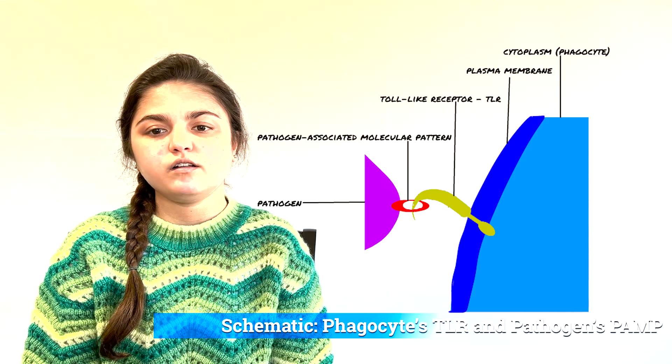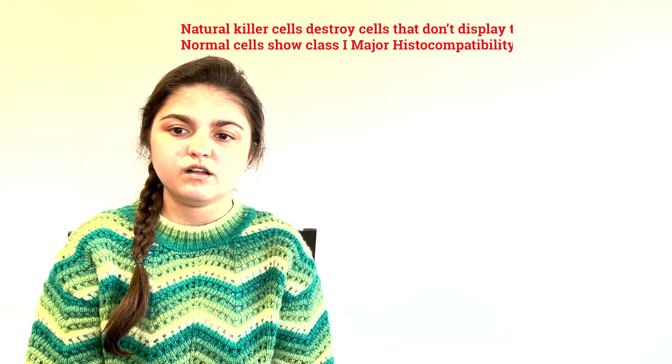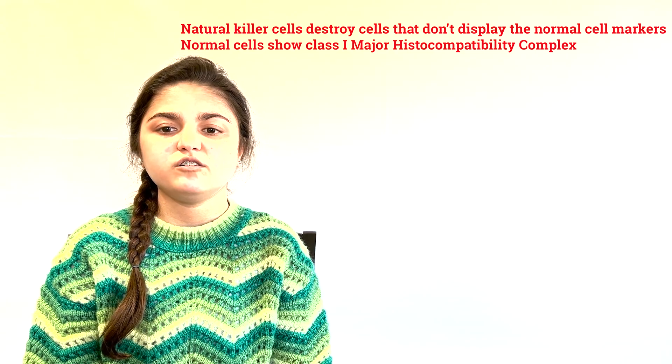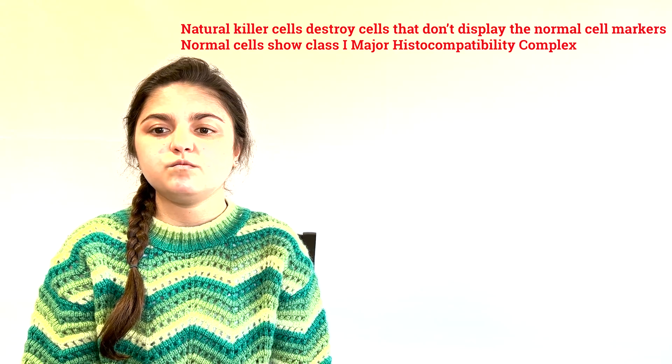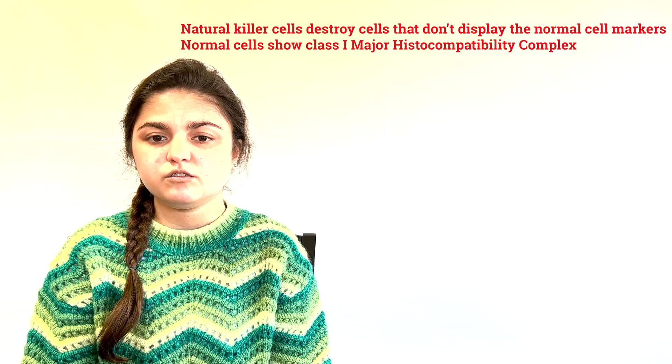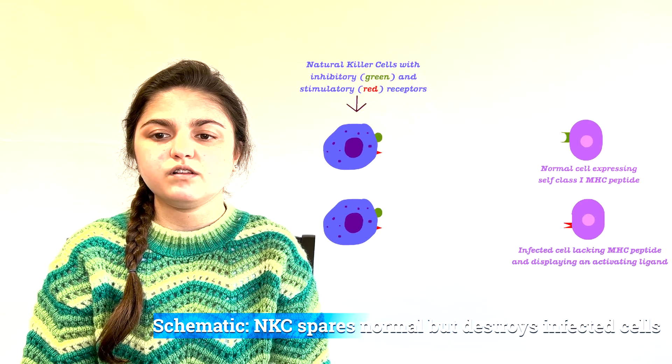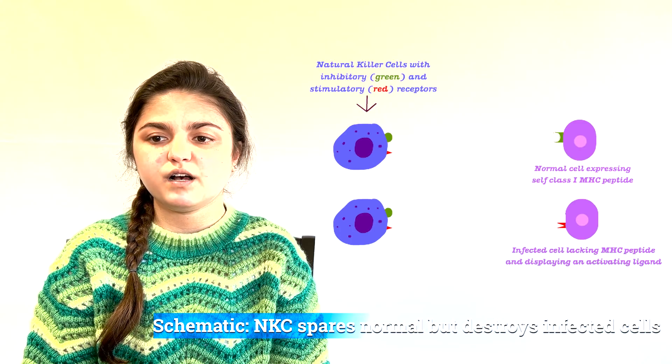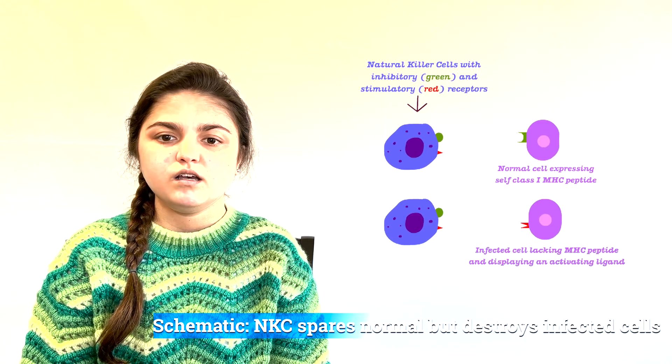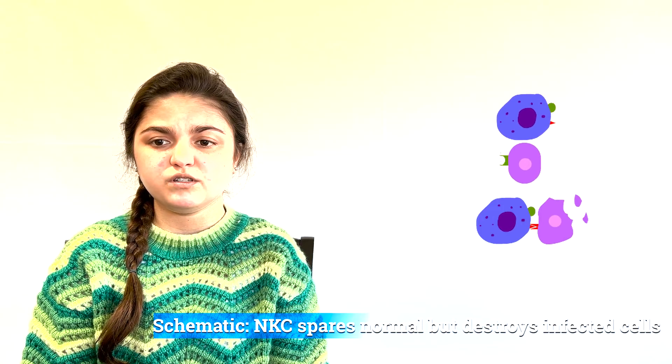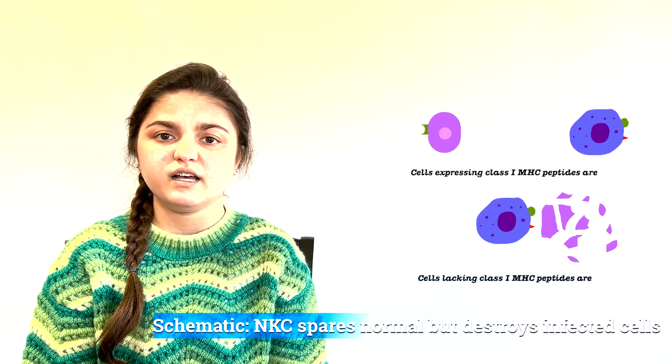The job of the natural killer cell is to destroy abnormal cells of the body, such as those infected by viruses or ones that are turning cancerous. The normal cells of the body are spared by the natural killer cell because they have proteins on the surface called self-class 1 major histocompatibility complex. Infected cells and tumor cells are not able to show these proteins on the surface and are marked for annihilation.